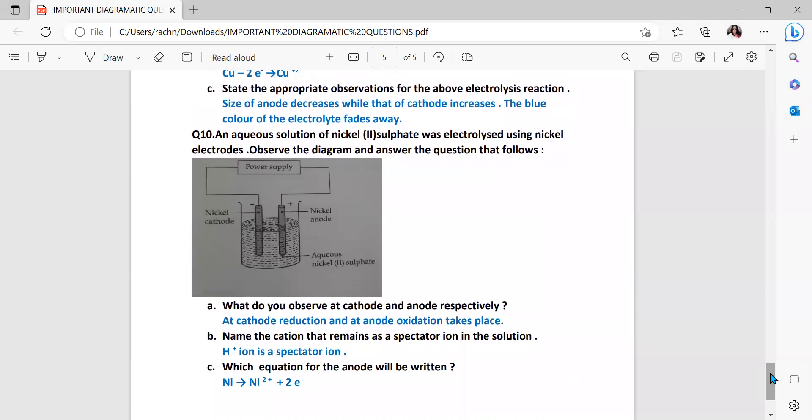An aqueous solution of nickel sulfate was electrolyzed using nickel electrodes. Observe the diagram and answer the question that follows. What do you observe at cathode and anode respectively? At cathode reduction and at anode oxidation takes place. Name the cation that remains as a spectator ion in the solution. Spectator means which is not allowed to move. It is only like we at times watch as spectators when we are sitting in the class instead of asking the questions or participating. As spectators we just sit and listen to the teachers and do nothing as passive listeners. So H plus ion is a spectator ion. Which equation for the anode will be written? It will be nickel changing into Ni plus 2 and losing 2 electrons because as I mentioned at your anode loss of electron will occur so the positive ion will be formed.